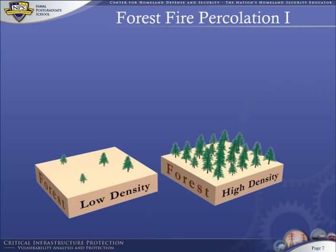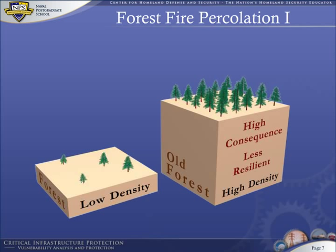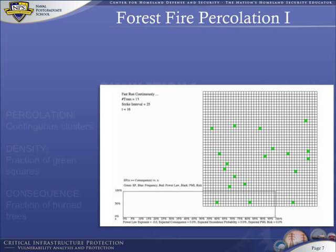Risk of high consequence forest fires is determined by the density of the forest. The more dense, the more likely consequences will be high. Thus, a forest becomes less resilient as density increases. Density increases as a forest gets older, so forests age and become more likely to burn down as they become denser. This phenomenon is illustrated by the following simulation.